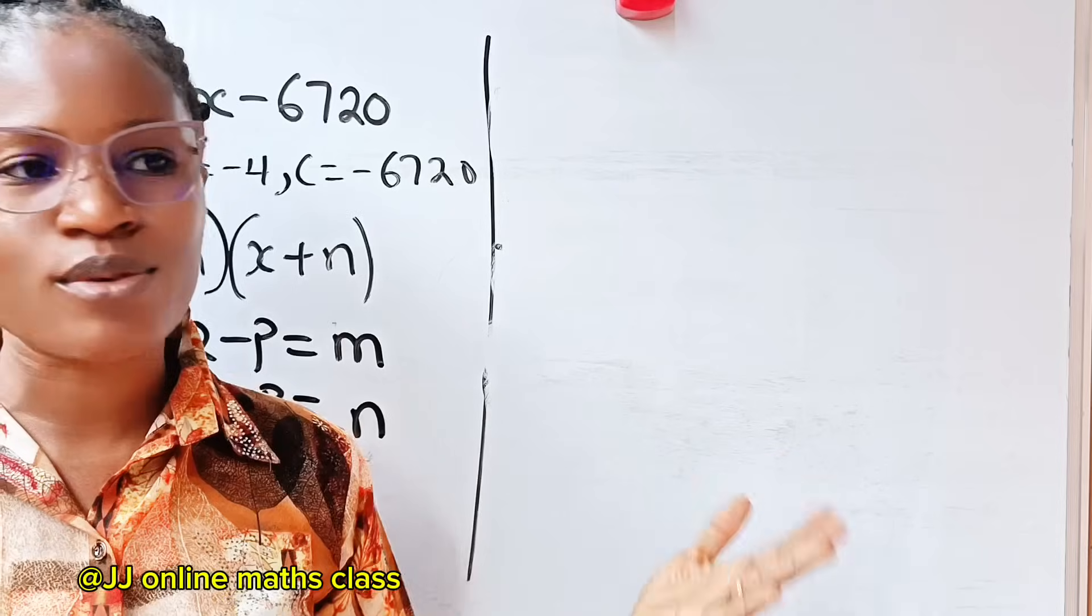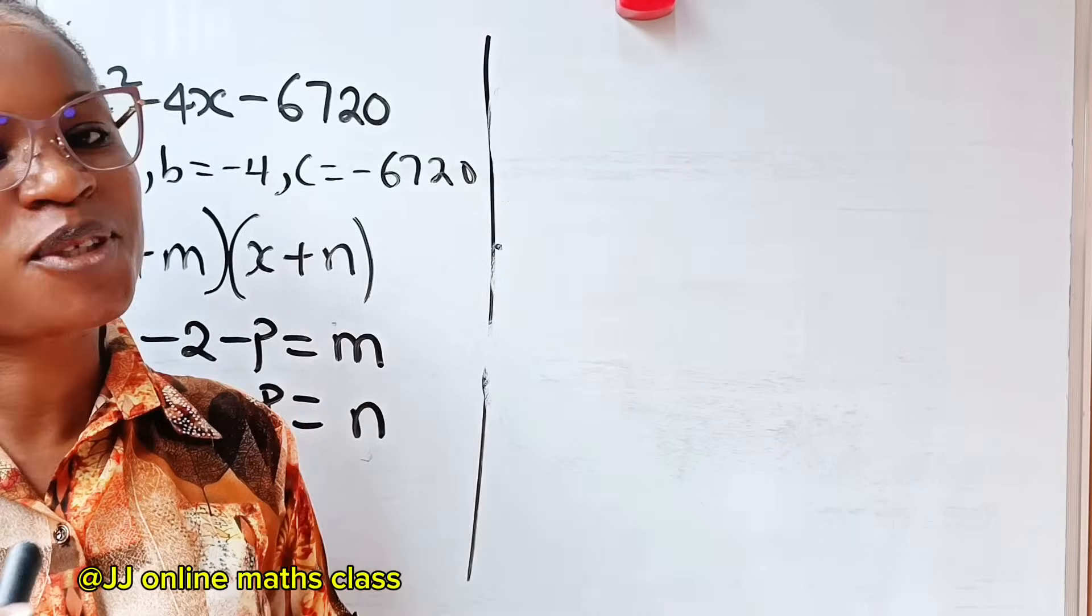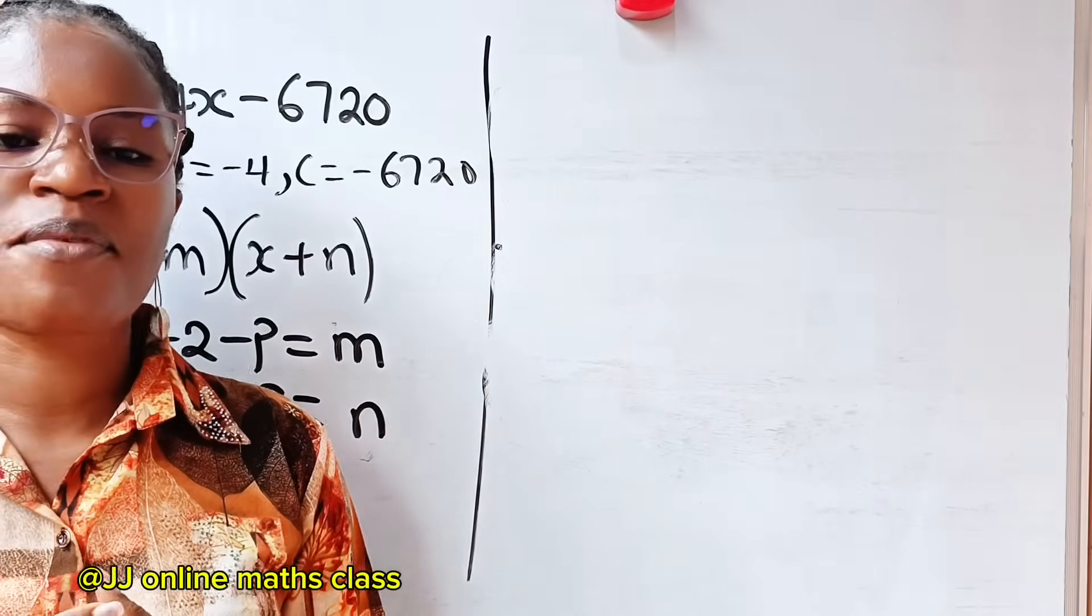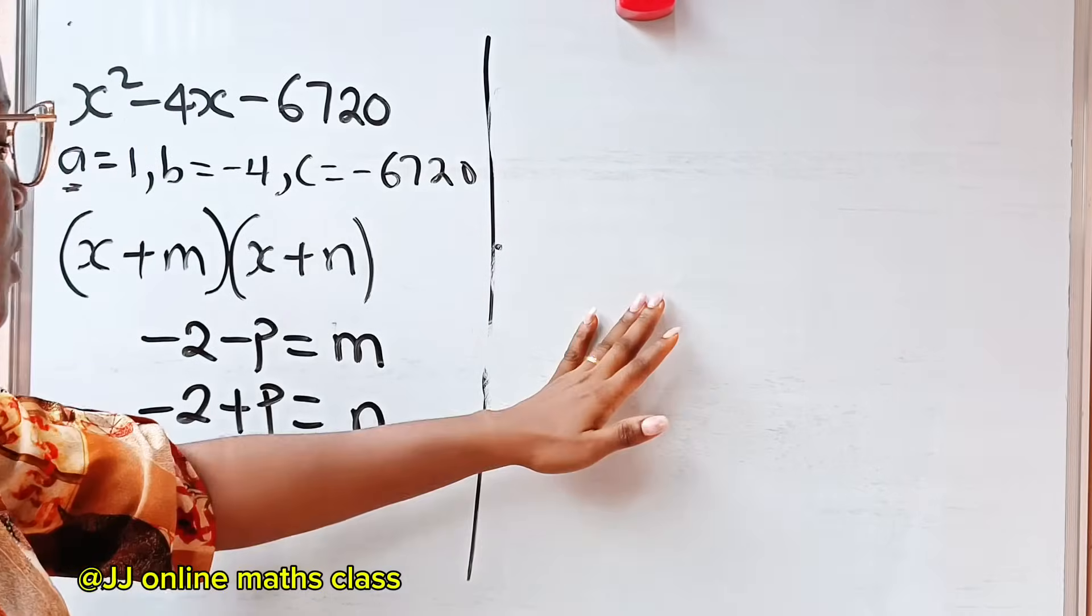So it means that minus 2 minus p will give us our m. Once we get it, we substitute it here. And minus 2 plus p will give us our n. Now, this is very important. We upload 2, 3 times every day, so always tune in to our channel to watch new updates. Give us a thumbs up if you are enjoying this video.